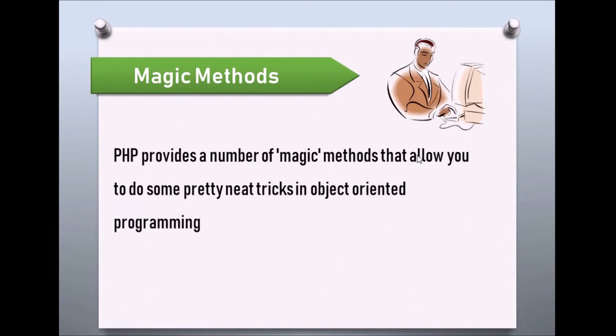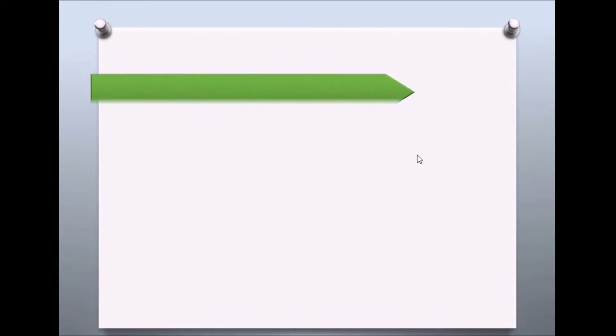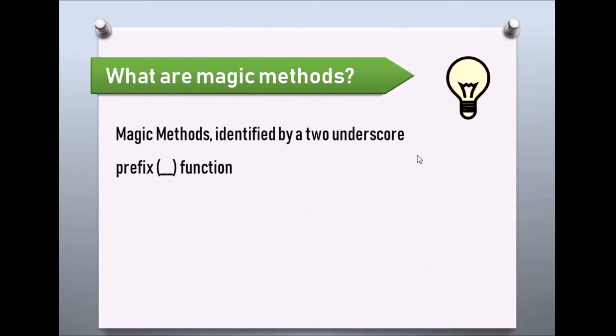How do we identify magic methods? If you have seen functions used somewhere in a framework, magic methods can be identified by looking at the function name. Functions with a double underscore prefix are called magic methods.